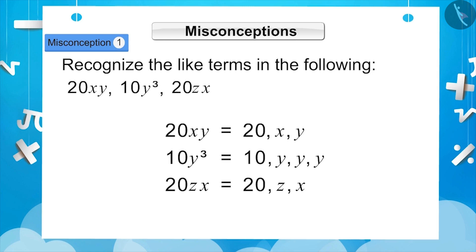But this is not correct. It is a misconception. The terms whose variables are equal, and not their coefficients, are called like terms. In the given terms, the coefficient of 20xy and 20zx is same, but their variables are different, so they are unlike terms.